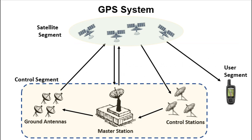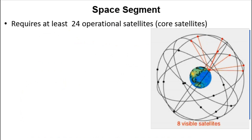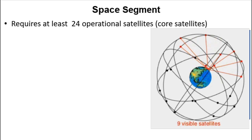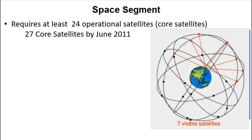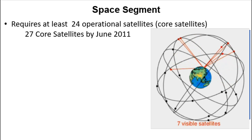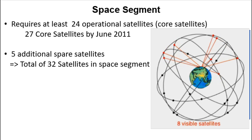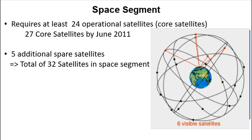The global positioning system is comprised of three segments: the space segment, the control segment, and the user segment. The space segment consists of at least 24 operational satellites, which constitute the core satellites. That's because it is the minimum number of satellites needed to cover the surface of Earth. However, in June 2011, the US Air Force expanded the core satellites to 27, simply to improve the accuracy of GPS. In addition, there are five spare satellites, which make a total of 32 satellites in the space segment.